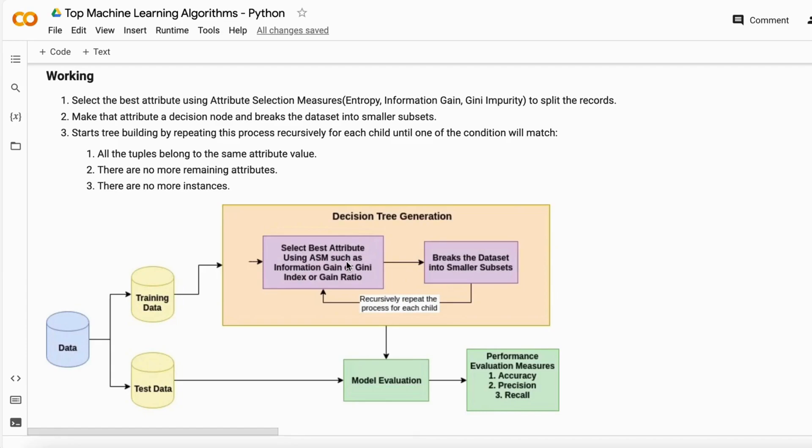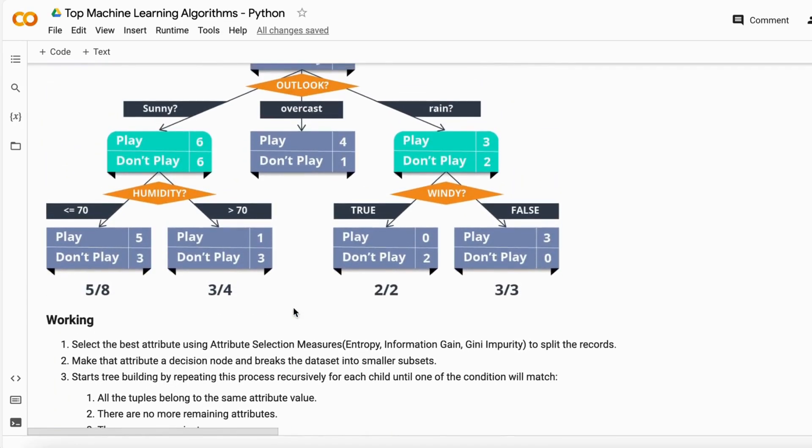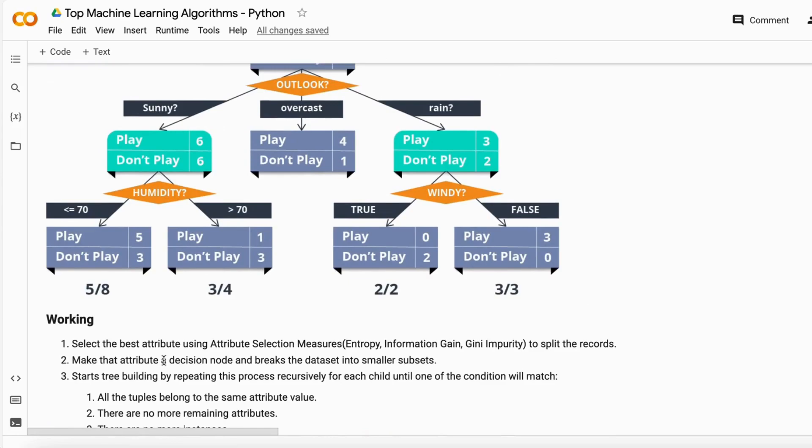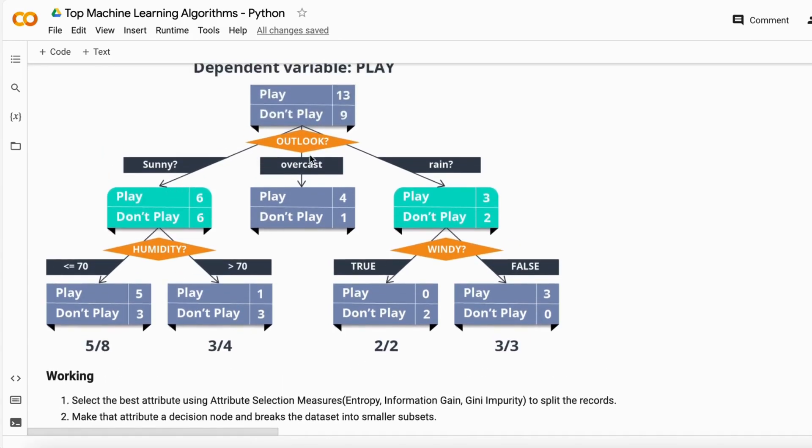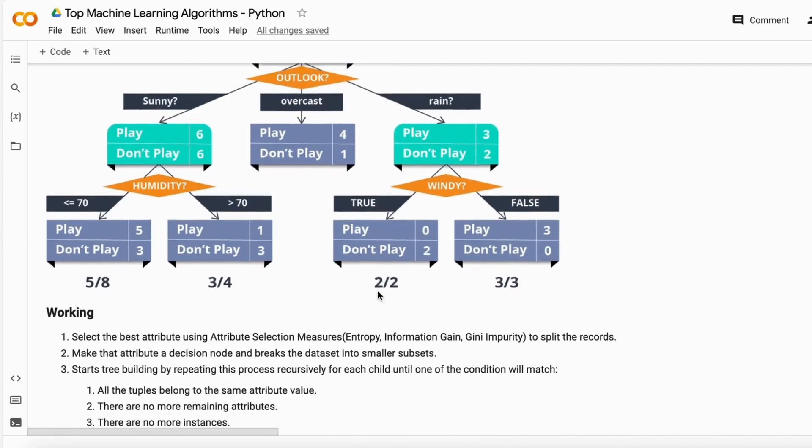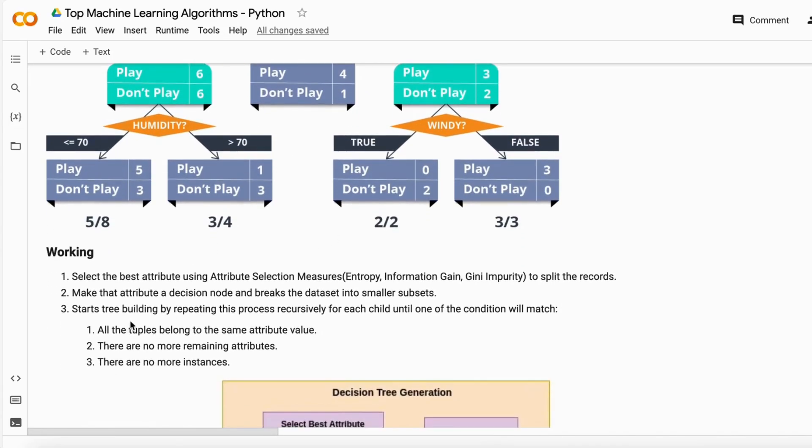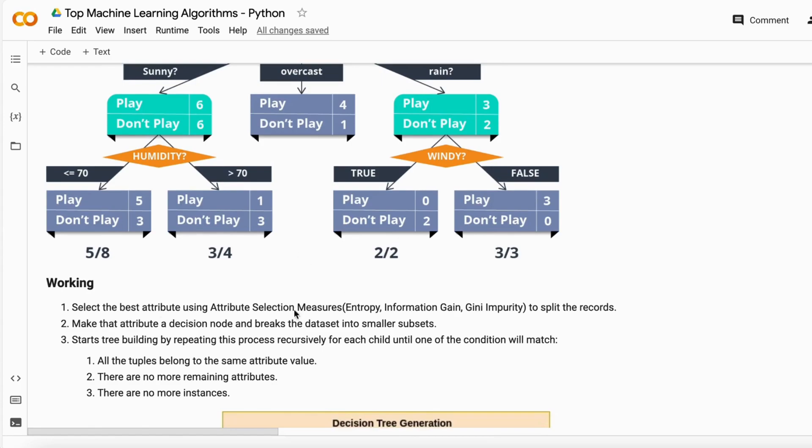So for now, you just need to understand at a very high level how it works. It first splits your complete data on the best attribute or best column it can find, which has the high information gain. Then it make that attribute a decision node and break into the smaller part like this. It just splits them into the smaller parts here. And then it start building the tree by repeating the same process.